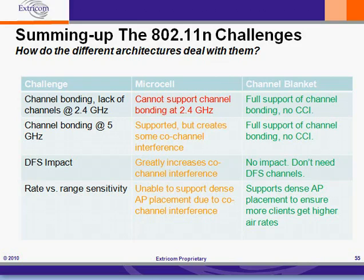As to the impact of DFS, if DFS is not available, the co-channel interference in the microcell architecture goes up dramatically. There's no impact to a lack of DFS in the channel blanket, because there's no need for the DFS channels. One of the very important byproducts of the channel blanket architecture is that there's no need to use the DFS channels. The use of frequency in both the 2.4GHz and 5GHz bands is so efficient that we have enough bandwidth without having to resort to the DFS channels.